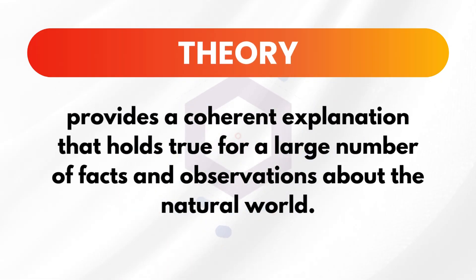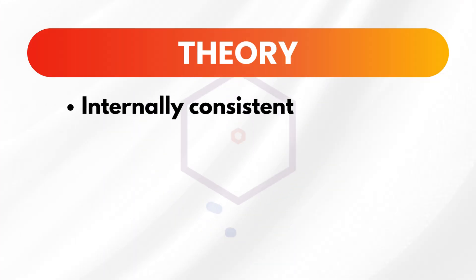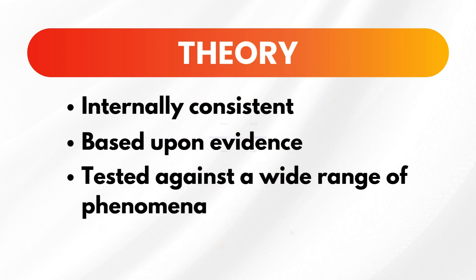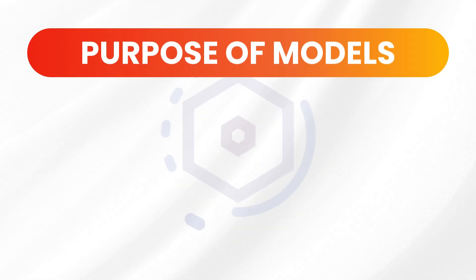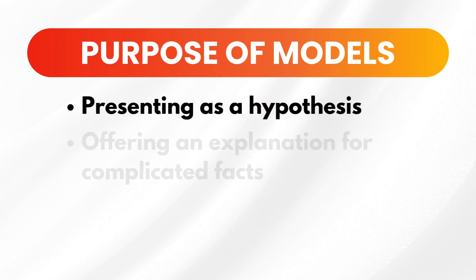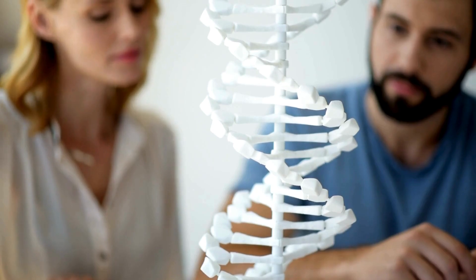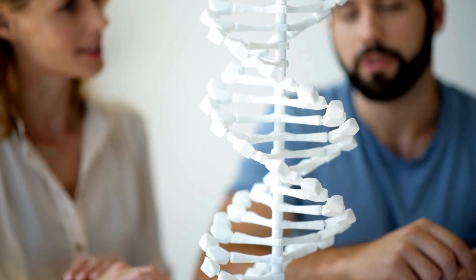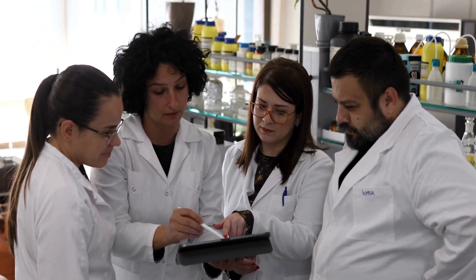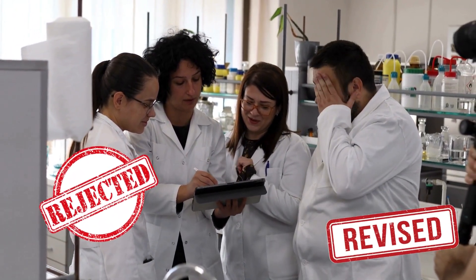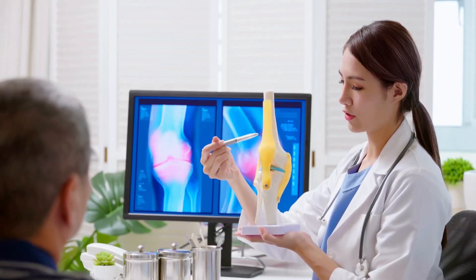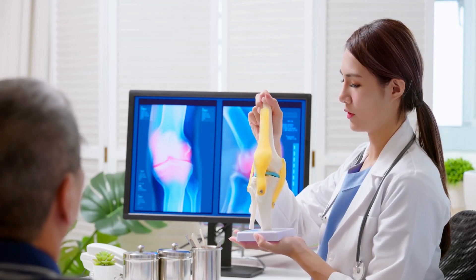So what do we mean by theory? Theory provides a coherent explanation that holds true for a large number of facts and observations about the natural world. It has to be internally consistent, based upon evidence, tested against a wide range of phenomena, and demonstrate problem solving. Models may be used for several purposes such as presenting a hypothesis or offering an explanation for complicated facts. Scientists may put out many models to describe or forecast potential outcomes. Scientists frequently disagree about whether their model is right, and as a result the model is either rejected or revised, highlighting the uncertain nature of scientific understanding.